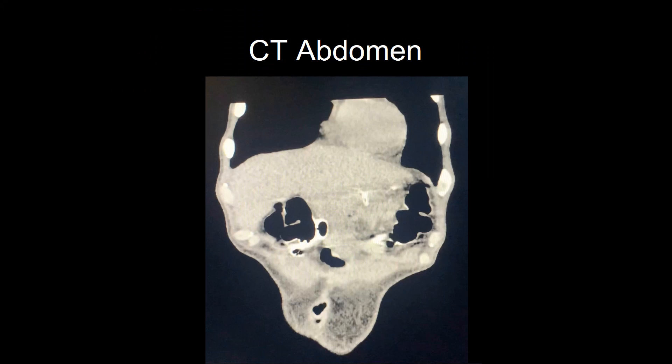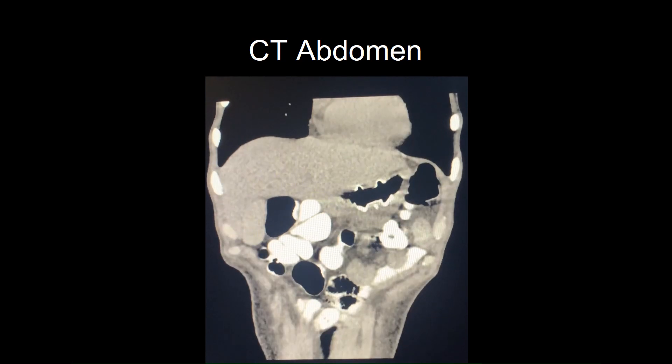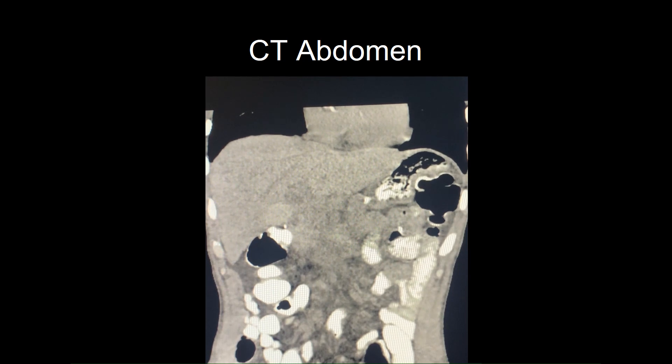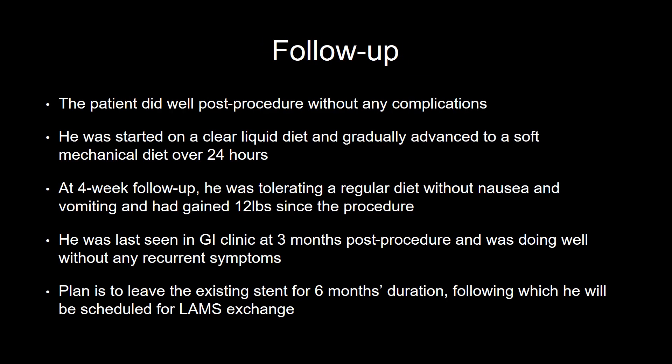CT obtained the following day confirmed appropriate LAMS position and showed decreased gastric distension with oral contrast opacifying the stomach and small bowel. The patient did well post-procedure without any complications. He was started on a clear liquid diet and gradually advanced to a soft mechanical diet over 24 hours. At four-week follow-up, he was tolerating a regular diet without nausea and vomiting and had gained 12 pounds since the procedure. He was last seen in GI clinic at three months post-procedure and was doing well without any recurrent symptoms. The plan is to leave the existing stent for six months, following which he will be scheduled for LAMS exchange.